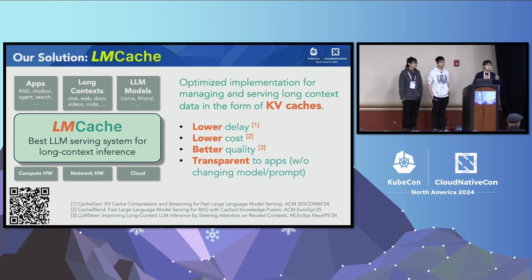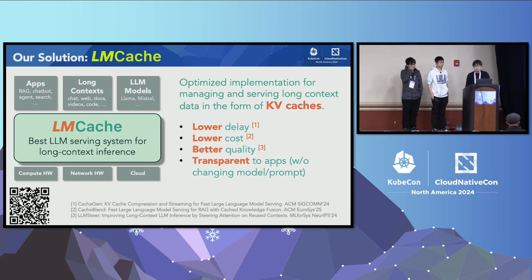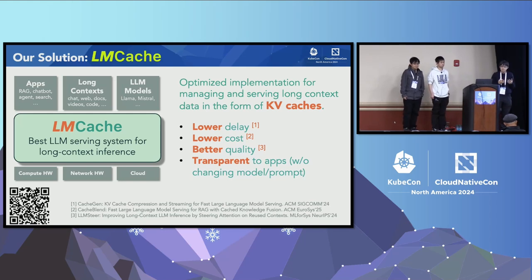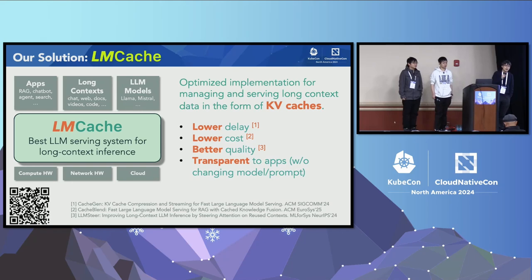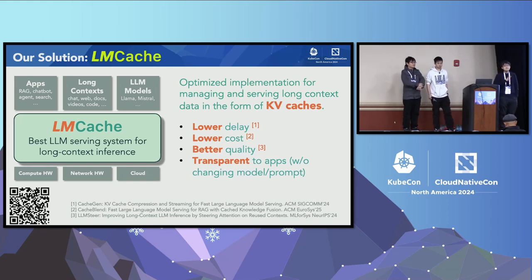LMCache is an open-source project inspired by this new abstraction. It's a highly optimized implementation for managing and serving long-context data in the form of KV caches. Because KV cache already captures the model's internal understanding of the long-context data, serving long-context inference with KV cache can massively speed up inference and avoids repeated computation when the context is used again and again. All these benefits happen without changing the model or prompt — it's totally transparent to applications running on top of it.